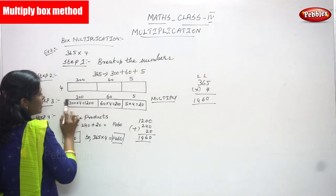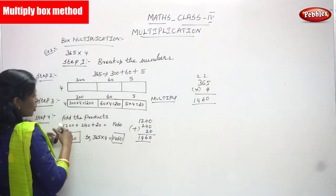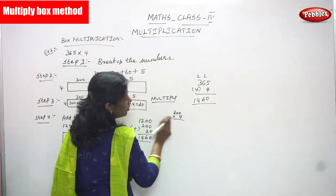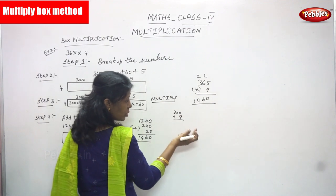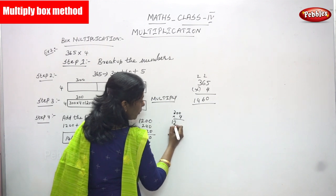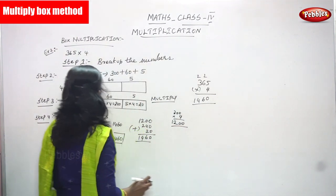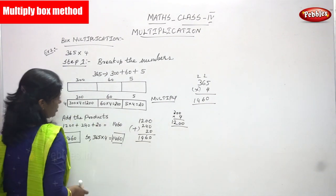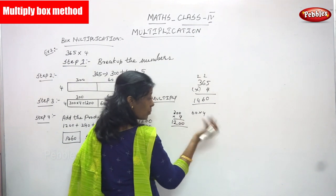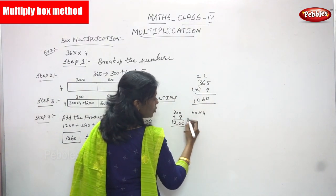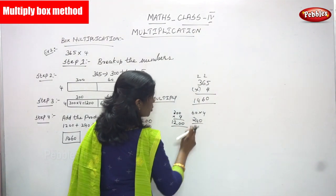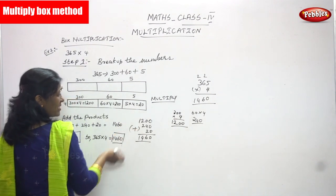Now multiply each box. Three hundred into four: first multiply 3 into 4 to get 12, then add two zeros, giving 1200. Sixty into four: multiply 6 into 4 to get 24, then add one zero, giving 240. Five into four: from the table, five fours are twenty. So the products in the boxes are 1200, 240, and 20.